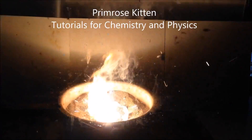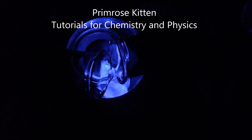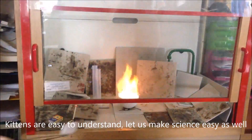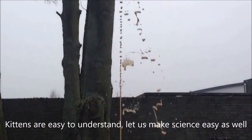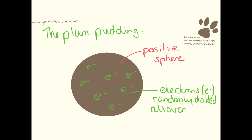Hey guys, today we're gonna be looking at how Rutherford worked out the structure of the atom. People originally thought that atoms were like plum puddings, with a large positive sphere with electrons randomly dotted all over them. This is known as the plum pudding model because it looks like a plum pudding or a Christmas pudding.